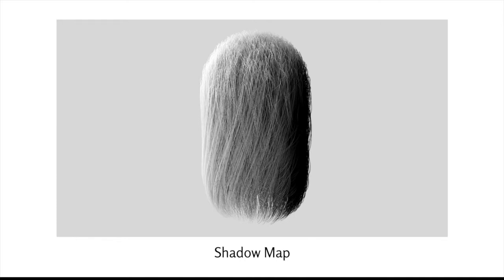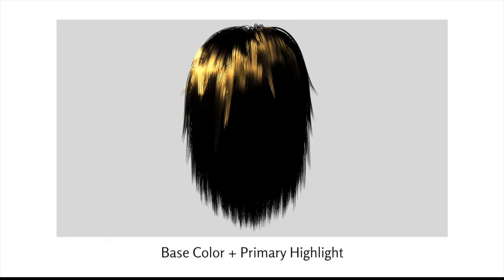Here is the render of the deep shadow map, which is used to compute dual scattering. Here are the primary highlight and base color components. The primary highlight represents the main light-colored highlight reflected off the surface of the hair — the more apparent the highlight, the more sheen the hair will have.